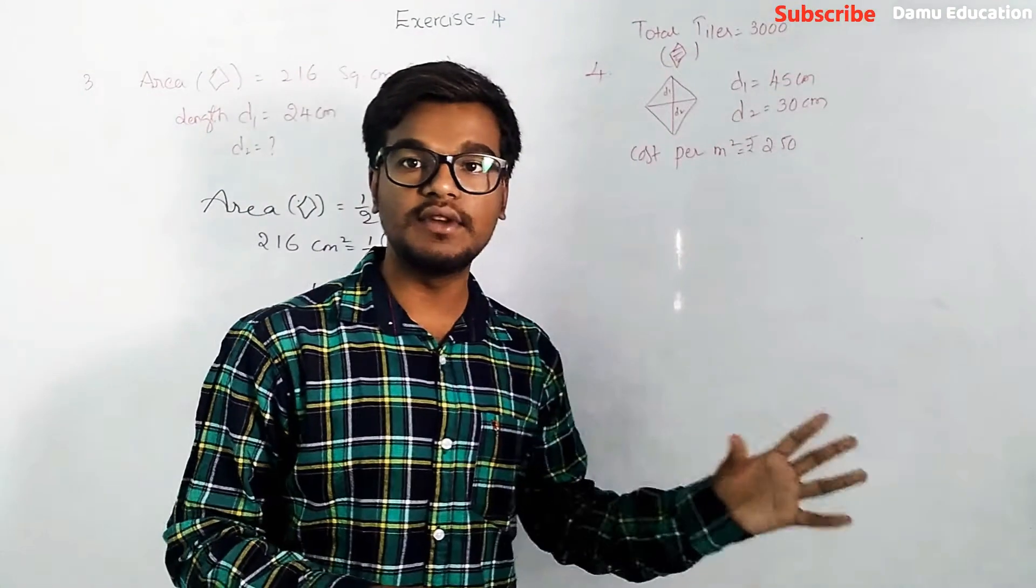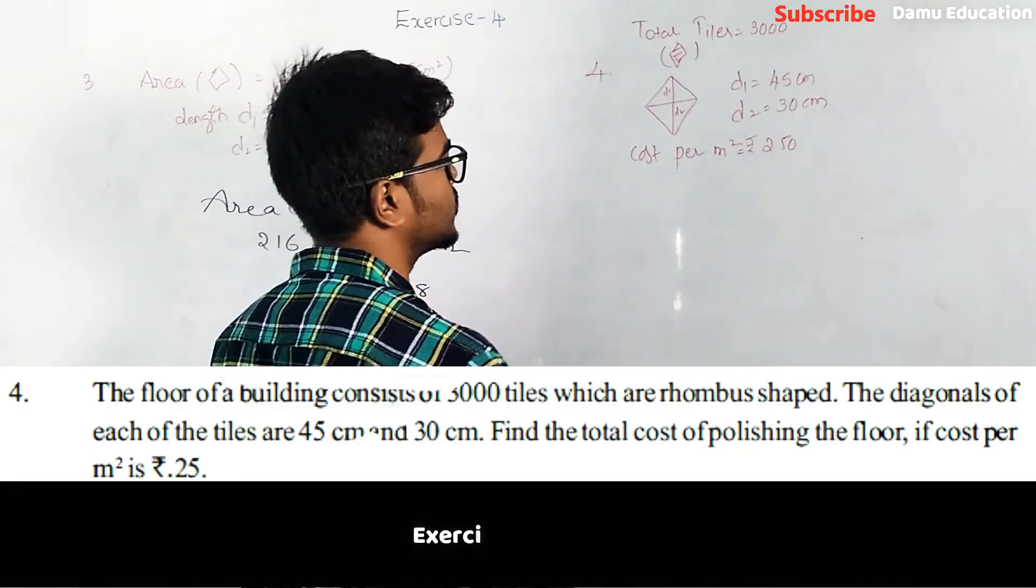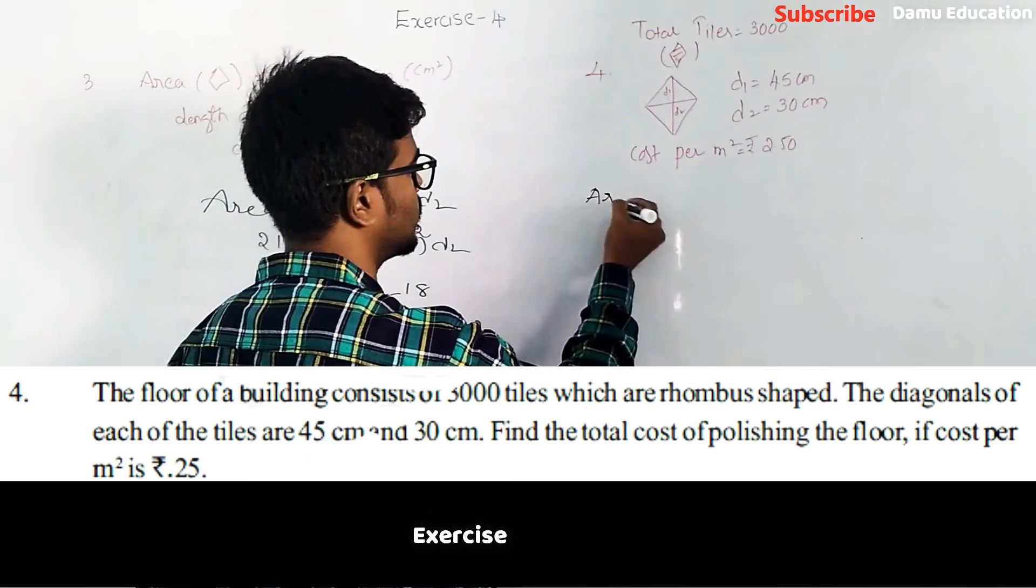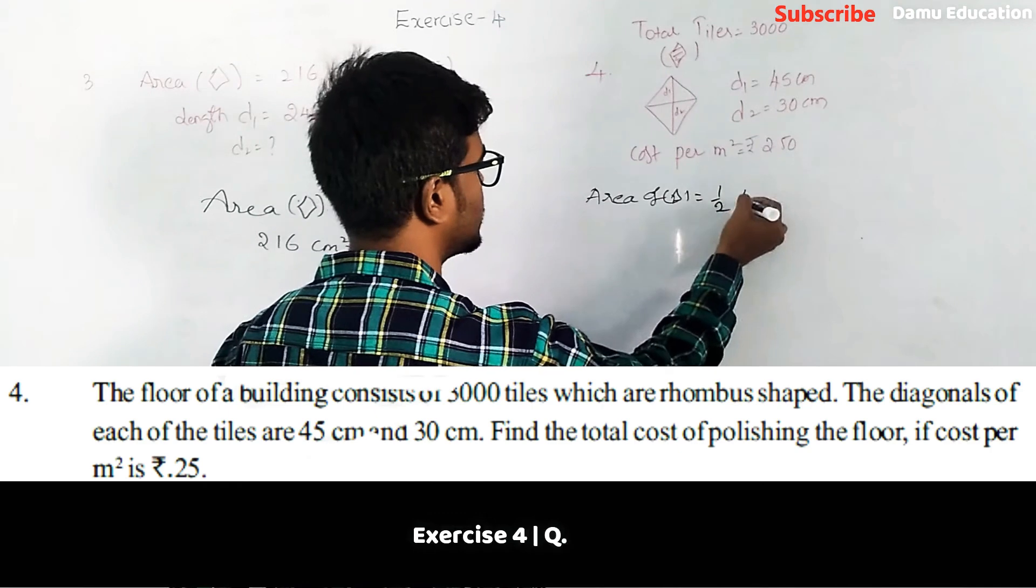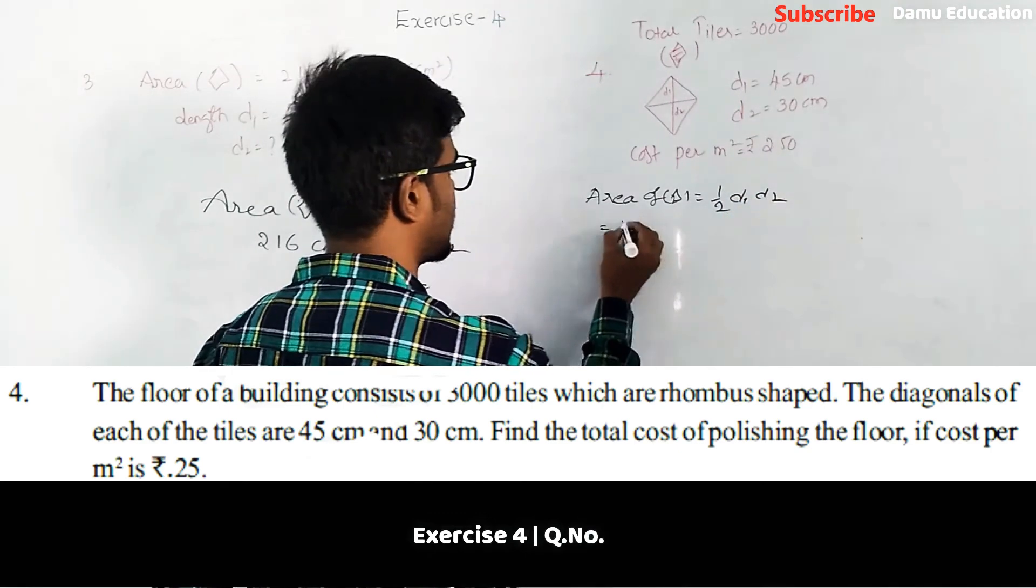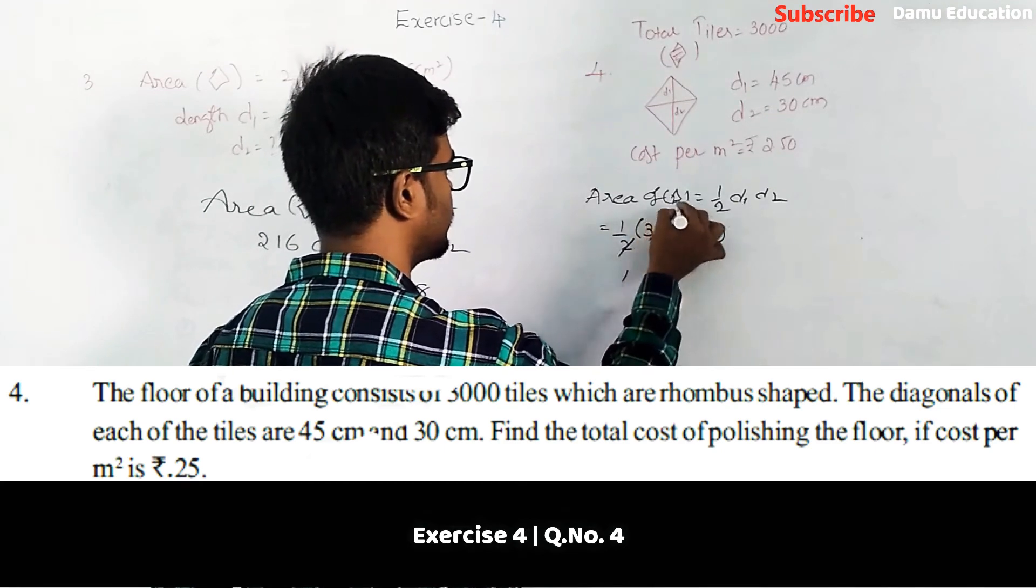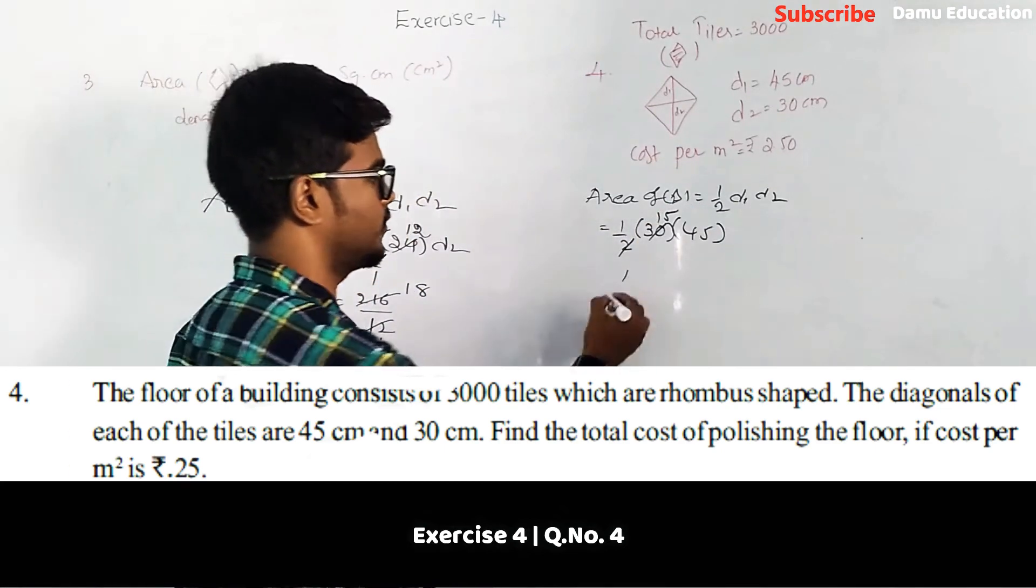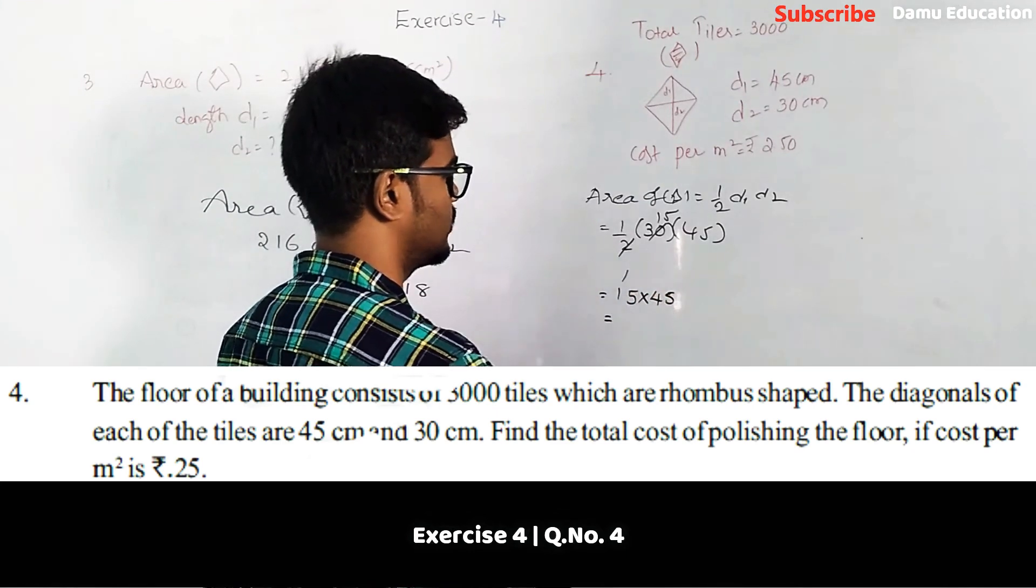Per meter square we need to convert into meters, then we are going to calculate the value. So simply take the area of each tile. Area of tile will be half d1 times d2, then half times 30 into 45. So 15 into 45.